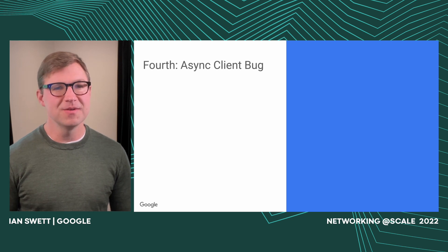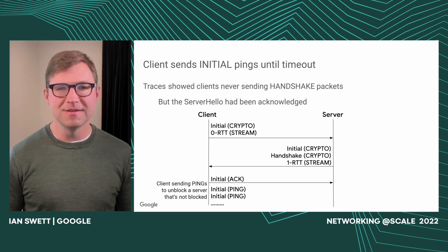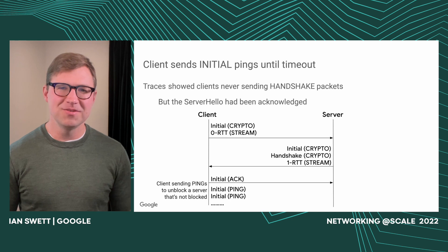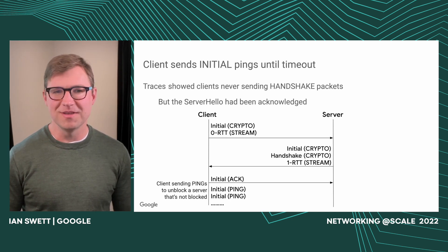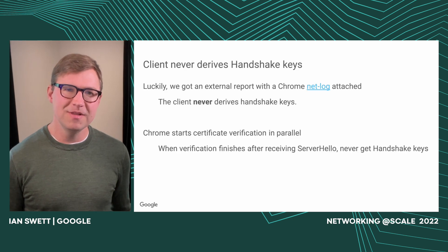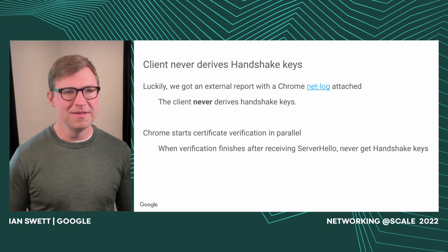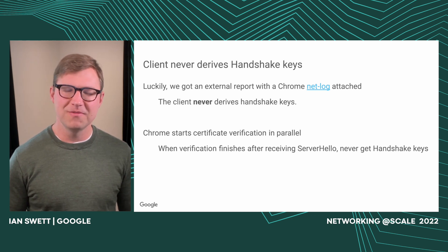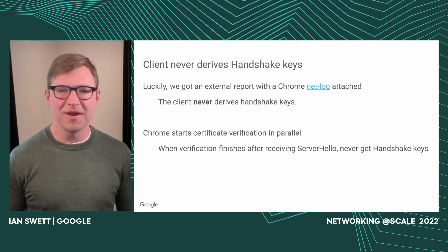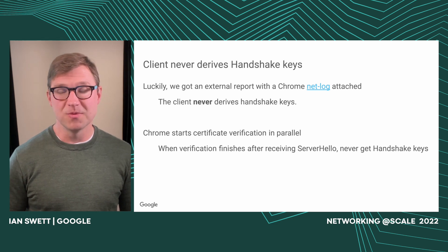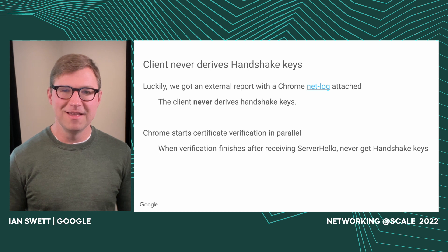Last but not least, we had an asynchronous client bug. The client was sending initial pings until it finally timed out, and we could see these in server traces but didn't really know what was happening. The traces showed the client was never sending handshake packets, but the server hello had been acknowledged. It turns out Chrome has a max handshake timeout of 10 seconds. The client was never deriving the handshake keys — but why? Luckily, we got an external bug report with the net log. We noticed that any time certificate verification finished after the handshake completed, we never had handshake keys. So it was just an asynchronous race condition — certificate verification finished first so often that we never noticed that if it finished afterwards, we didn't actually generate the keys. It's a fairly simple fix, but it took quite a while to go from having server traces to seeing it in the wild on a client trace.